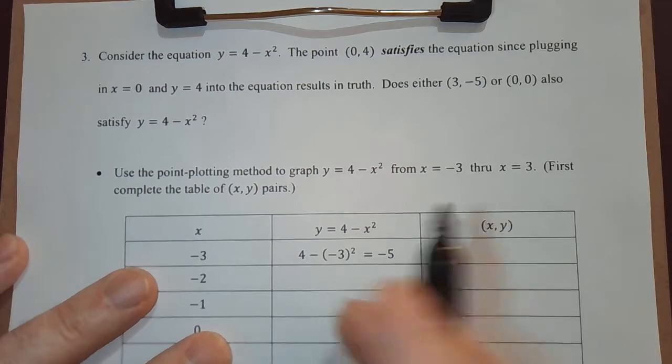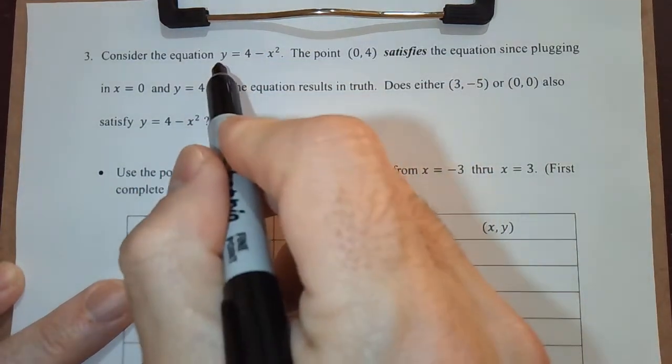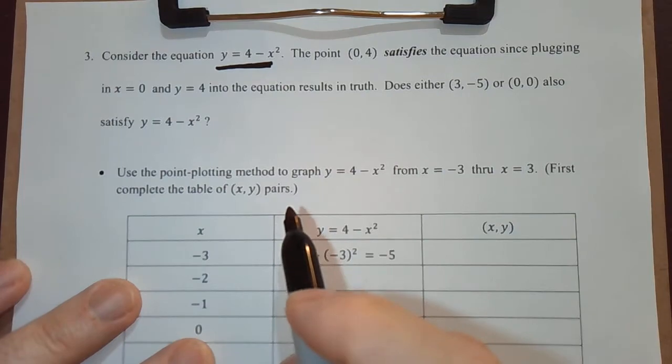In this video, we're going to learn a simple vocabulary term, and we're going to graph a nice equation, this equation right here, y equals 4 minus x squared.